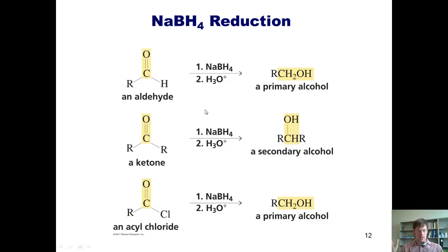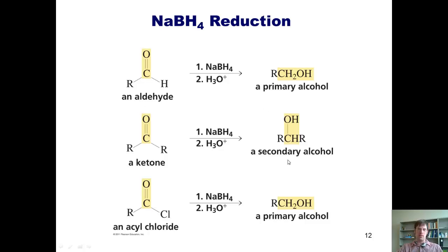As we've already discussed in Chapter 18, if you take an aldehyde and treat it with sodium borohydride, the H⁻ comes right into that carbonyl carbon, thrusting the electrons onto the oxygen, which then gets quenched, giving a primary alcohol. If you do the same reaction with a ketone, the H⁻ comes up, electrons go up onto the oxygen, it gets quenched with acid, and gives a secondary alcohol.